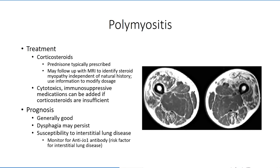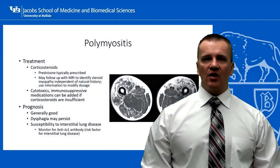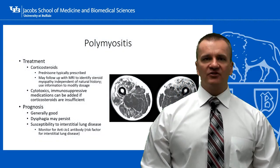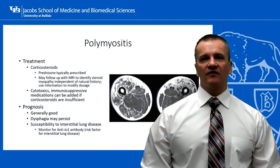Prognosis is generally good once an ideal corticosteroid dose is achieved, although complications related to chronic corticosteroid use may lead to morbidity. One other complication is the presence of anti-JO1 autoantibodies, which target the histidyl-tRNA synthetase enzyme. These antibodies are highly specific to the inflammatory myopathies, and polymyositis in particular, being present in as many as a quarter of all patients with the condition. The presence of anti-JO1 is a poor prognostic indicator and puts the patient at an increased risk of interstitial lung disease.